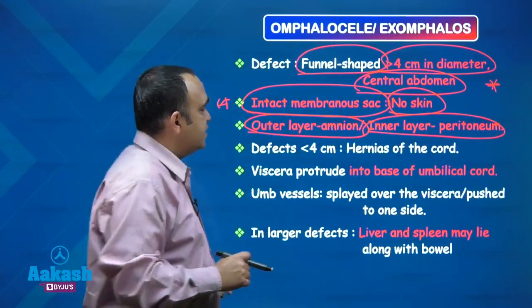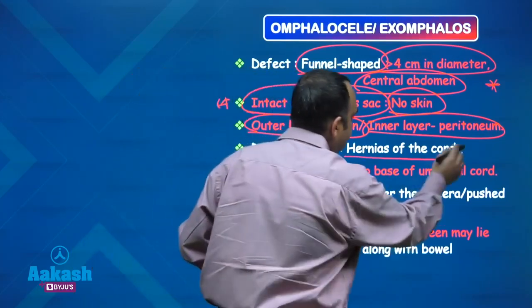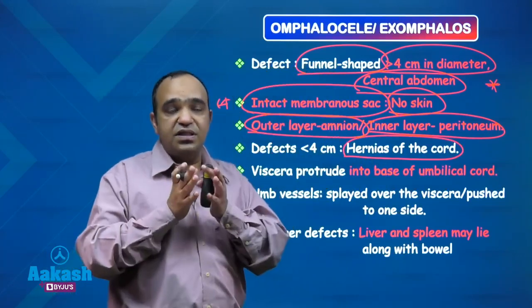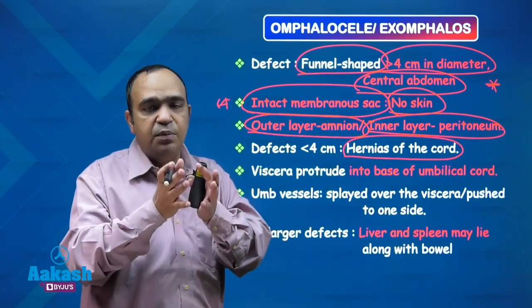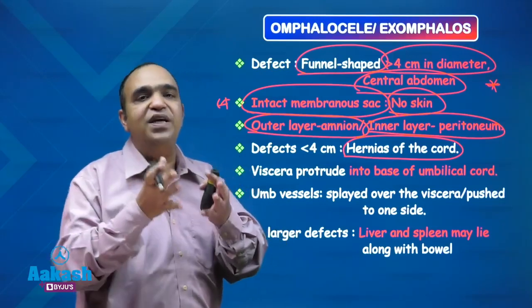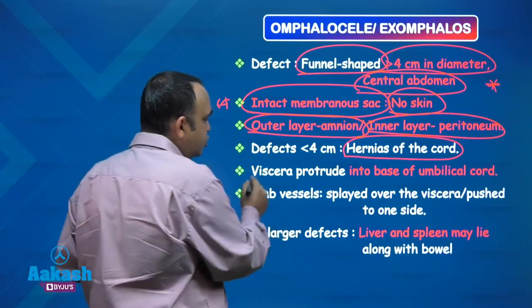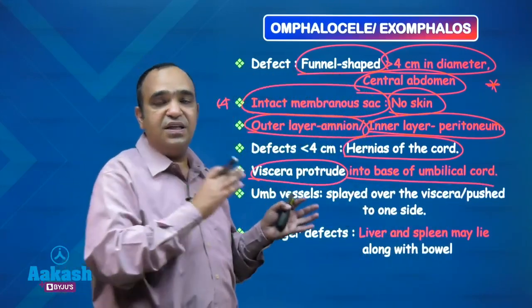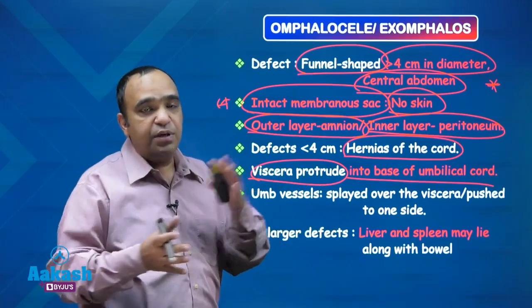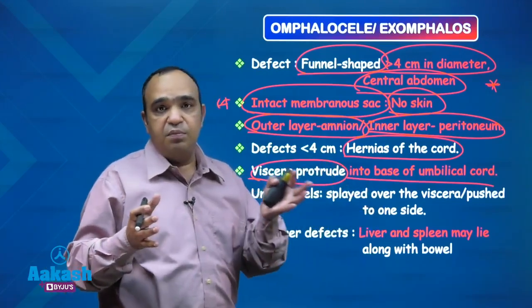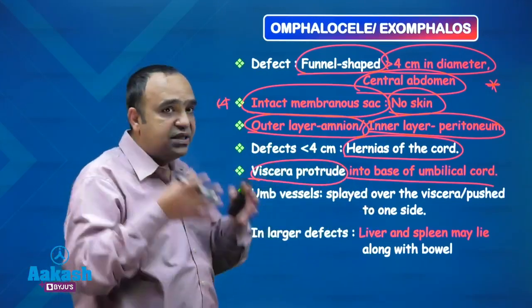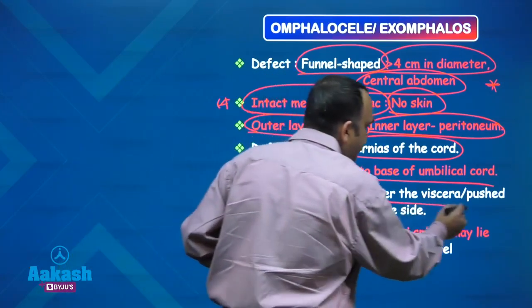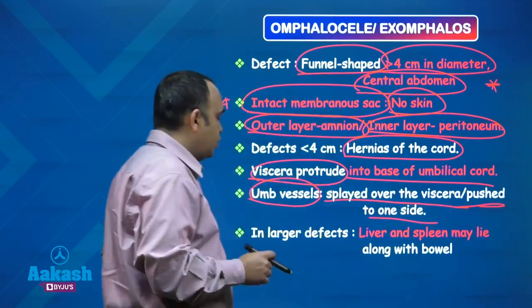If the defect is less than 4 centimeters, it is sometimes labeled as hernia of the cord because the defect is central — it is basically herniation into the cord. The bowel enters through the base of the umbilical cord, so viscera protrude into the base of the umbilical cord. In gastroschisis the cord was separate from the herniation, but here it is at the base of the cord, causing the umbilical vessels to be split over the viscera or pushed to one side.